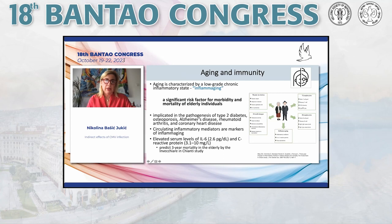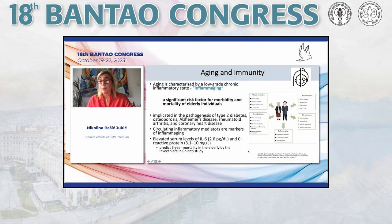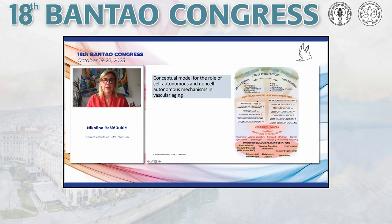The other side is immunity. Aging is characterized by a low-grade chronic inflammatory state called inflammaging, which is a significant risk factor for morbidity and mortality of elderly individuals. It is implicated in the pathogenesis of type 2 diabetes, osteoporosis, Alzheimer's disease, and coronary heart disease. One study in Italy showed that elevated serum levels of interleukin-6 and C-reactive protein predict three-year mortality in the elderly.